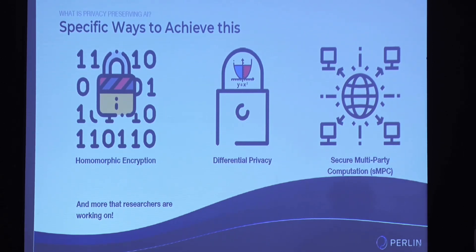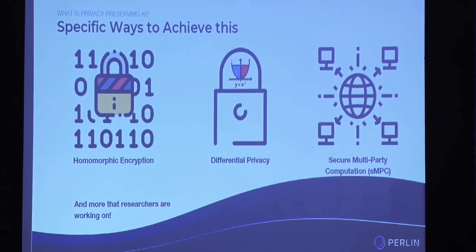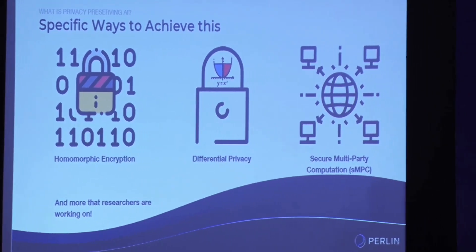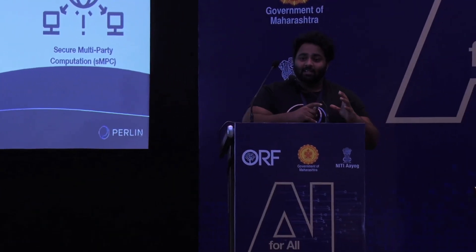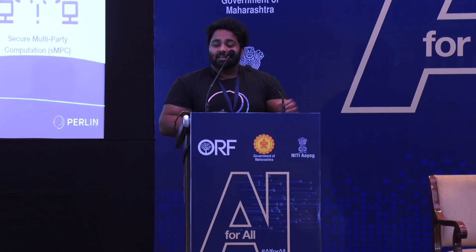The second one is differential privacy, which is more of a statistical model. Every time you take in a data set — for example, if you're voting on yes or no — there's a probability that it won't take that data set and will just put a random number instead. What that means is, unlike data anonymization, every single data point you're collecting now has a probability of being wrong, which means you can't actually do a linkage attack. This can be done without any computational overhead and still produce statistically significant results.